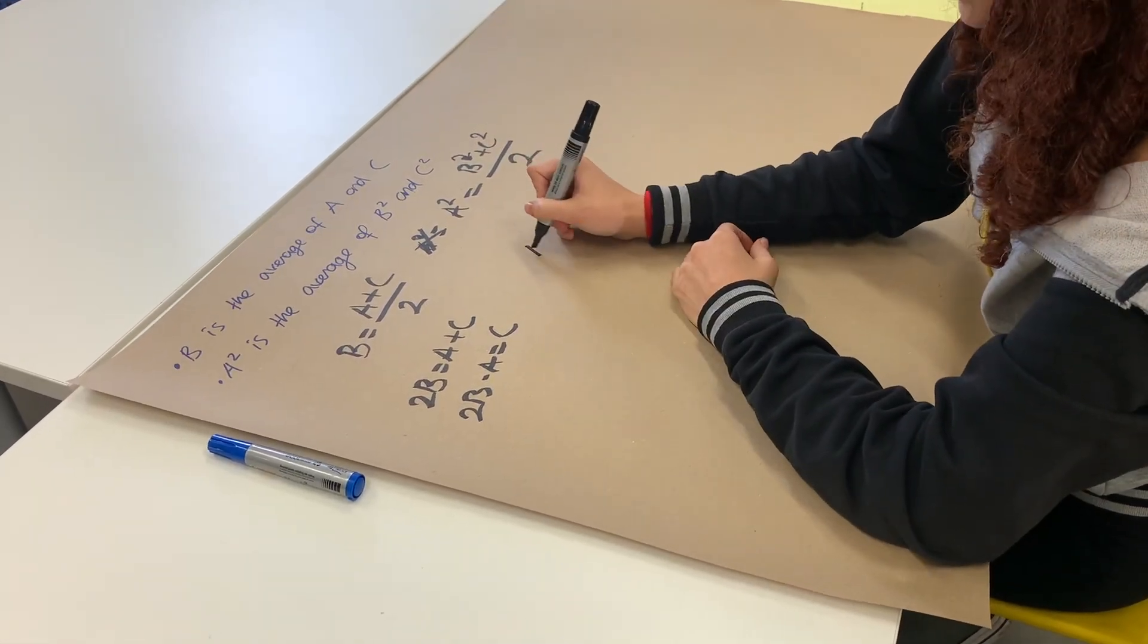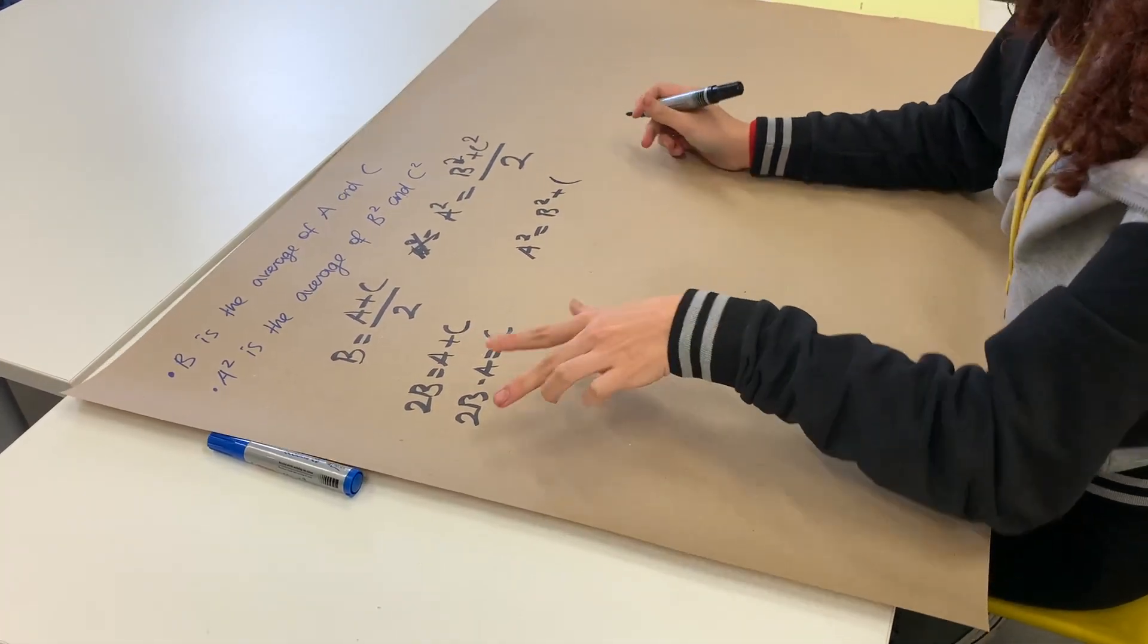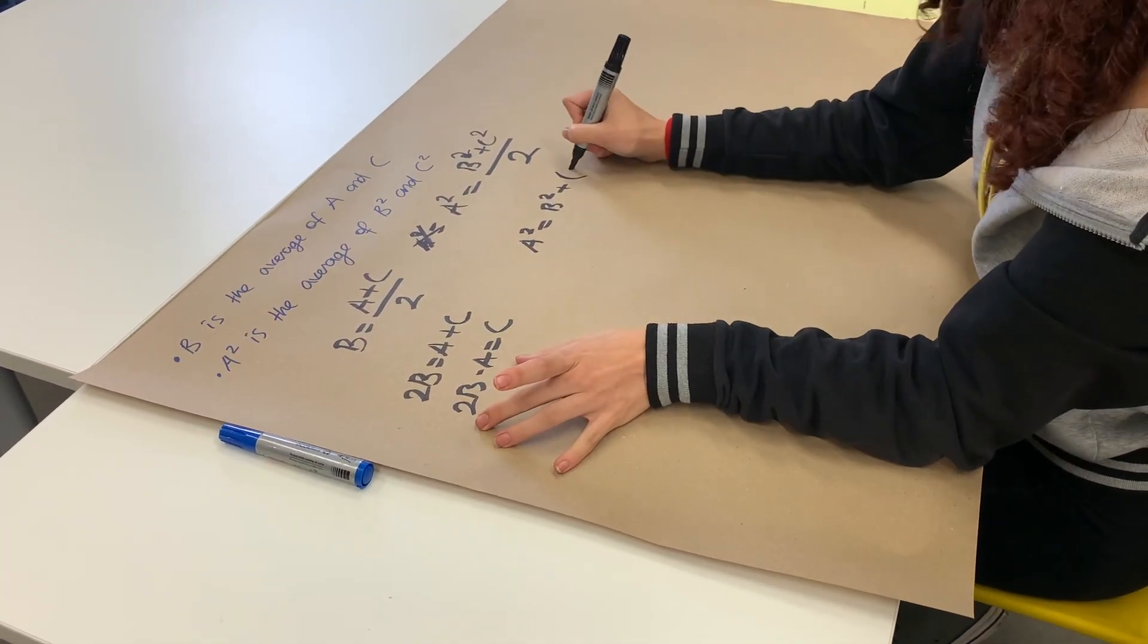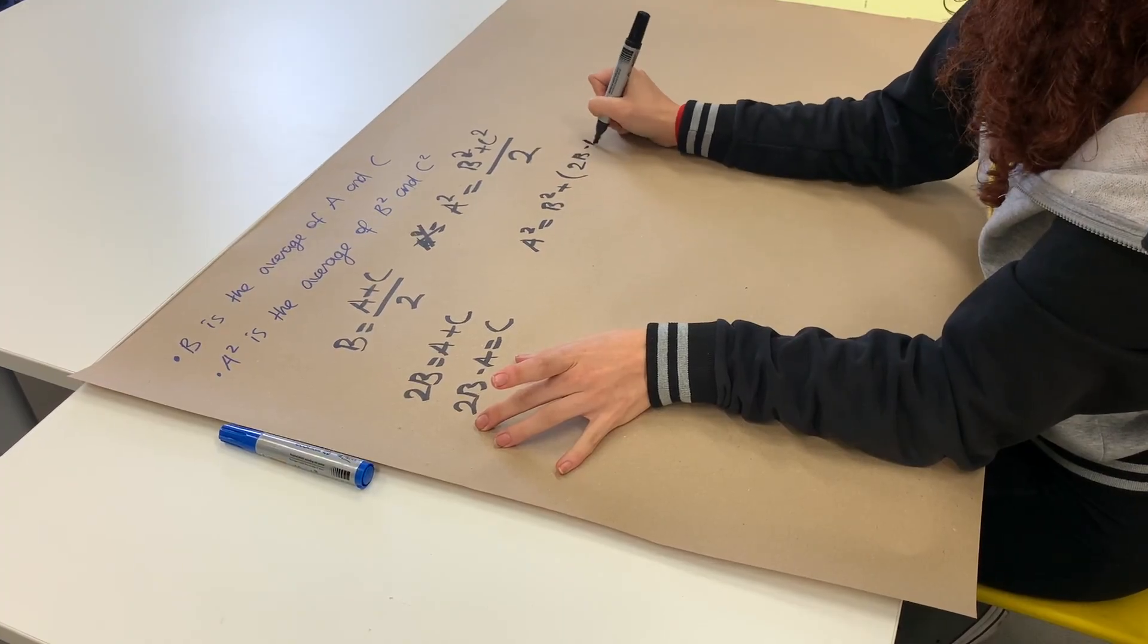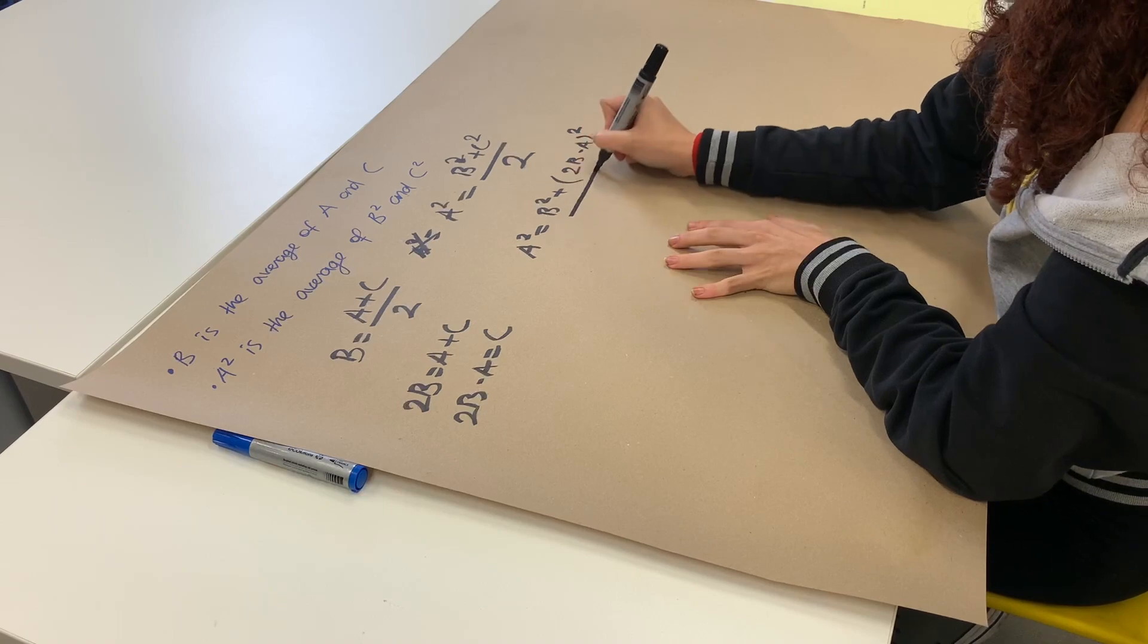So we could just say that A squared is equal to B squared plus we have this whole expression there. We say 2B minus A, don't forget the square there, the whole thing with the brackets, over two.